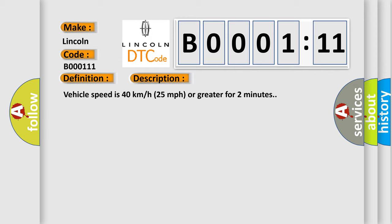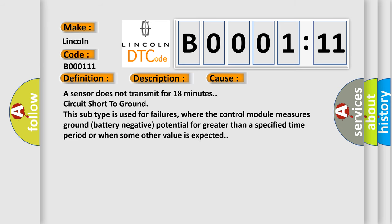And now this is a short description of this DTC code. Vehicle speed is 40 kilometers per hour or 25 miles per hour or greater for two minutes. This diagnostic error occurs most often in these cases: a sensor does not transmit for 18 minutes, circuit short to ground. This subtype is used for failures where the control module measures ground battery negative potential for greater than a specified time period or when some other value is expected.